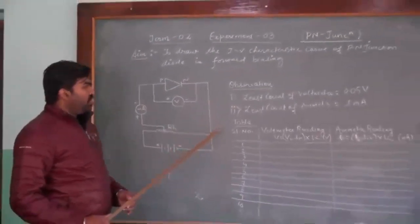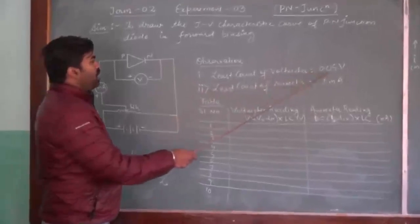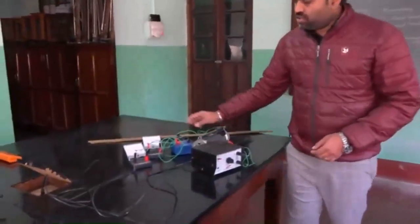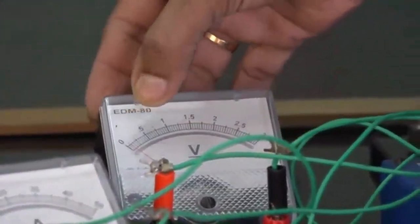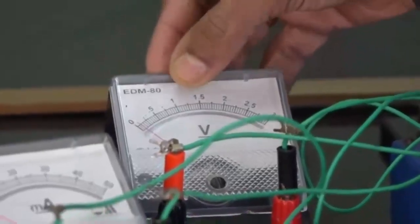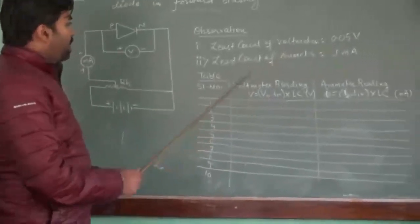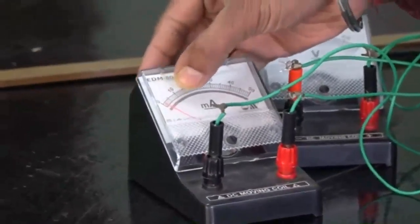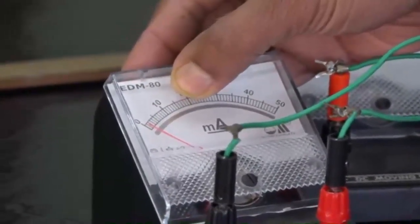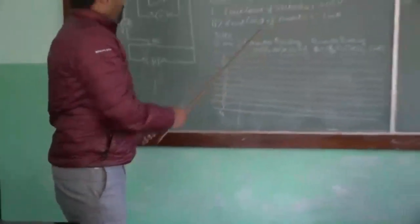For the observations, the least count of the voltmeter is 0.05 volt. As you can see, there are 20 divisions for one volt, so the minimum measurement we can make is 1 divided by 20, that is 0.05 volt. The least count of the milliammeter: for 10 milliamperes we have 10 subdivisions, so for each division it will be 1 milliampere. The least count of the milliammeter is 1 milliampere.